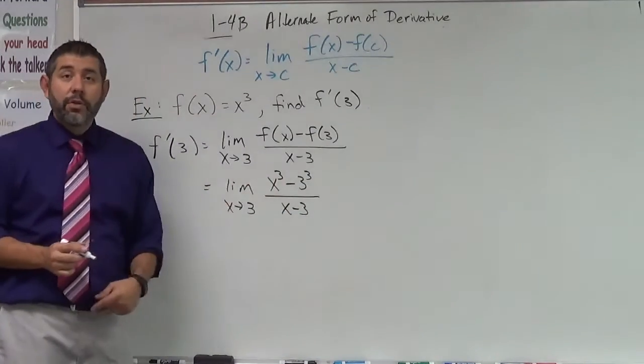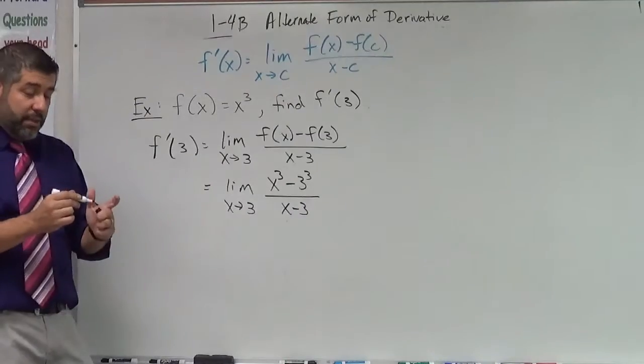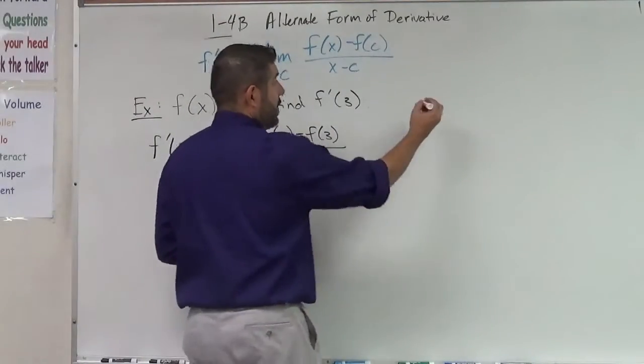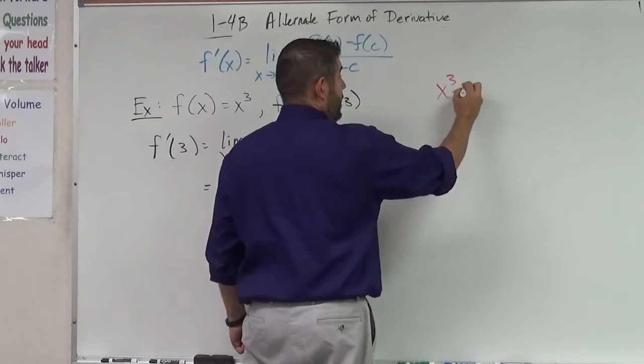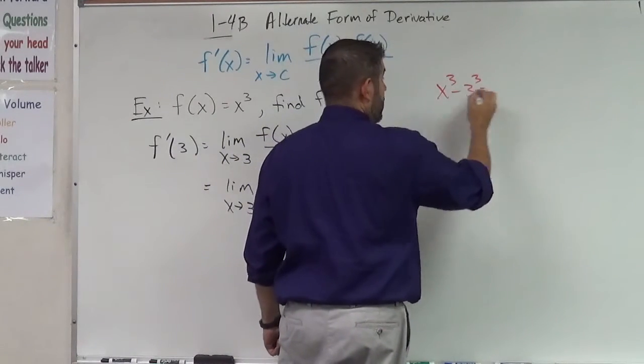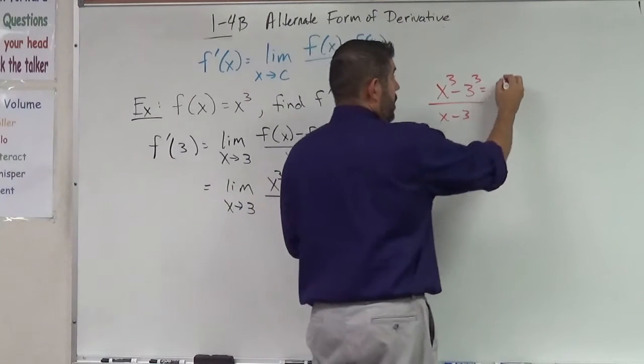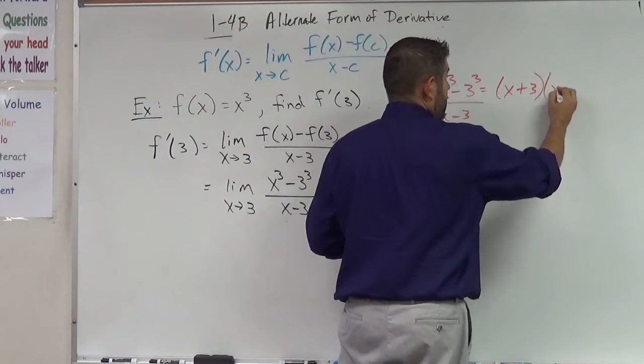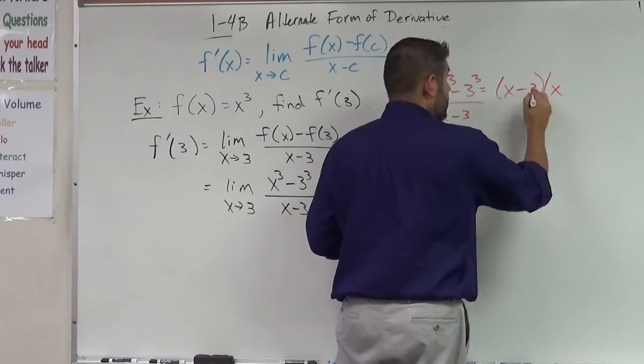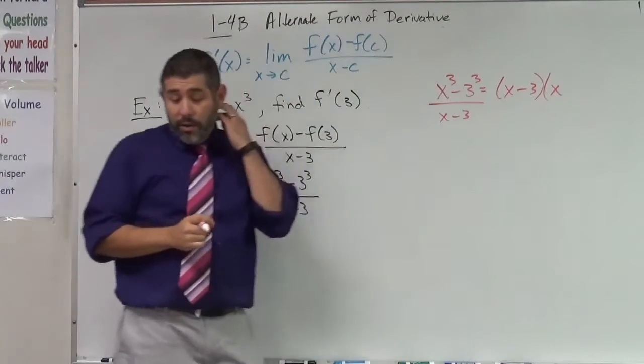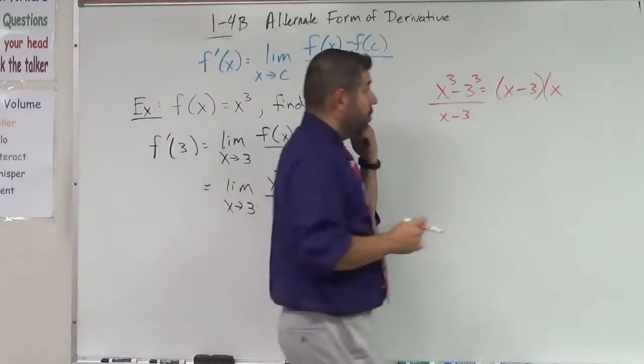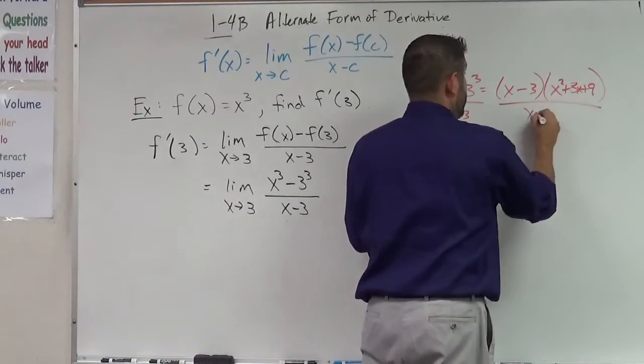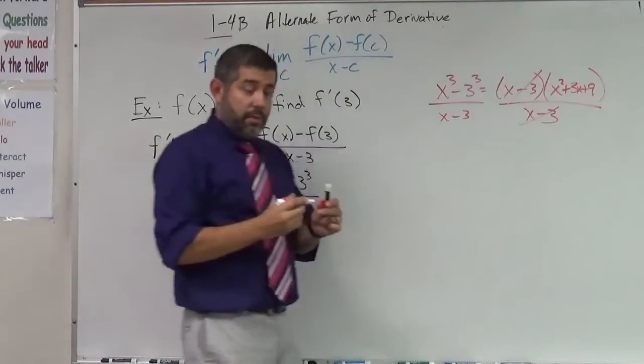So now notice that here we have a difference of cubes, right? So we can simplify this using a difference of cubes. And I'll go ahead and do it over here on the side here. So x cubed minus 3 cubed all over x minus 3, so this is what we have here. We're going to factor that to x plus 3 times x minus 3 times x squared plus 3x plus 9. All over x minus 3, and these guys cancel out.